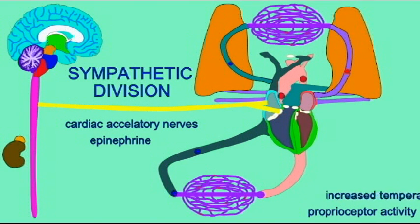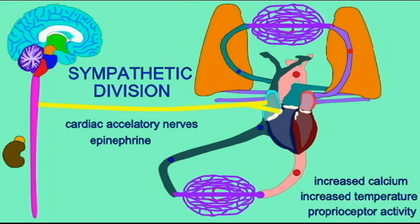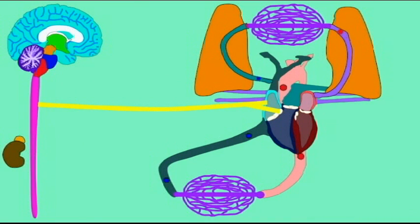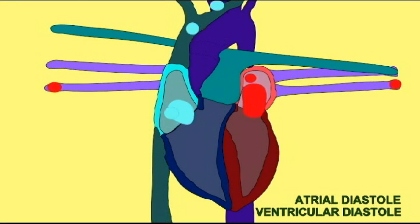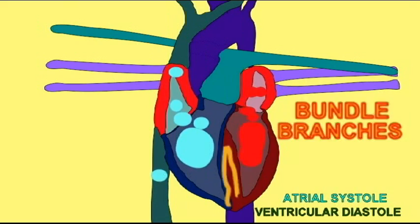Also, the sympathetic division causes epinephrine to be released from the adrenal glands, which sit over the kidneys, during an emergency or during stress. Epinephrine, acting as a hormone, can also then increase the frequency of cardiac cycles.